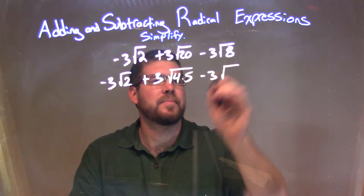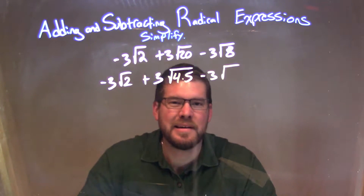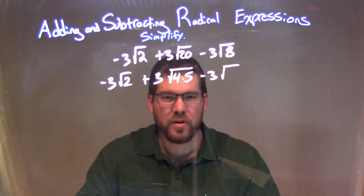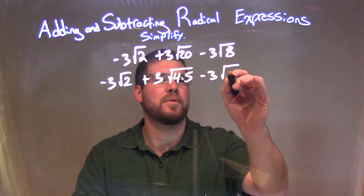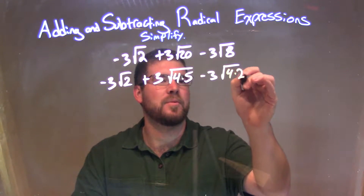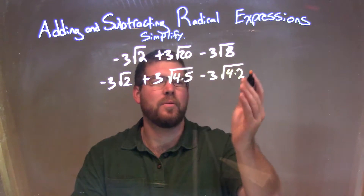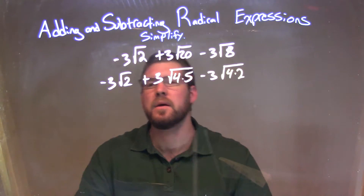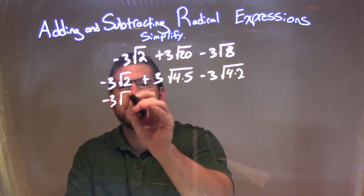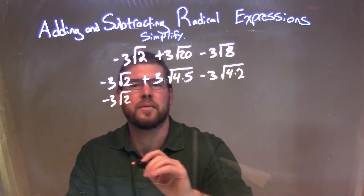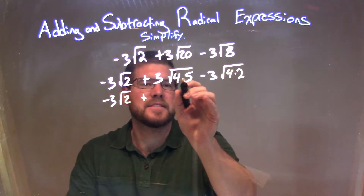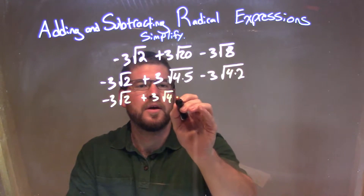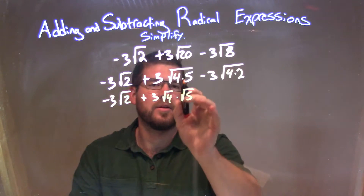And the same thing with 8. I can break 8 down to be 4 times 2, and the square root of 4 I know I can easily take, so I'm going to do the square root of 4 times 2, and I put the number I can take the square root of first. Now simplifying here, this first term I'm just leaving alone as negative 3 times the square root of 2, but here I can separate out the 4 and the 5. So 3 times the square root of 4 times the square root of 5 — you're allowed to separate that.